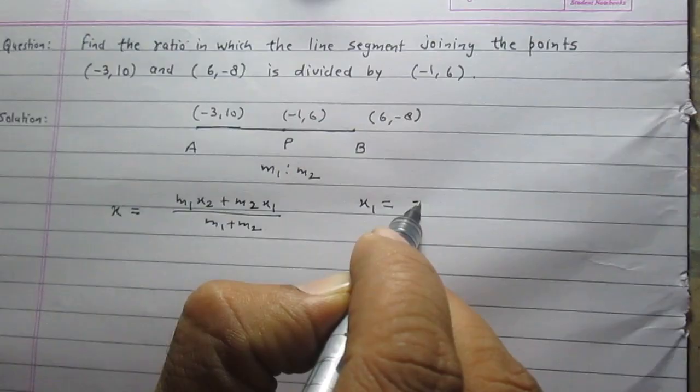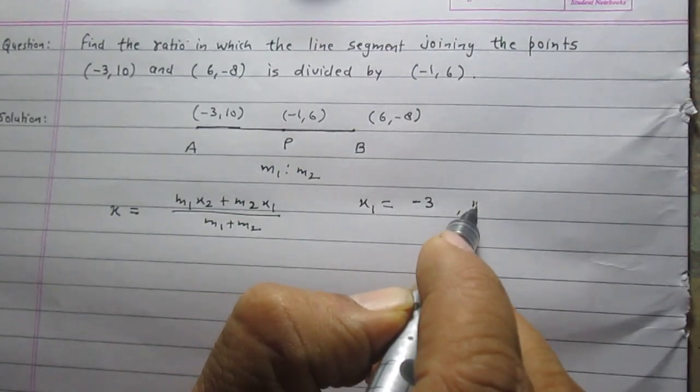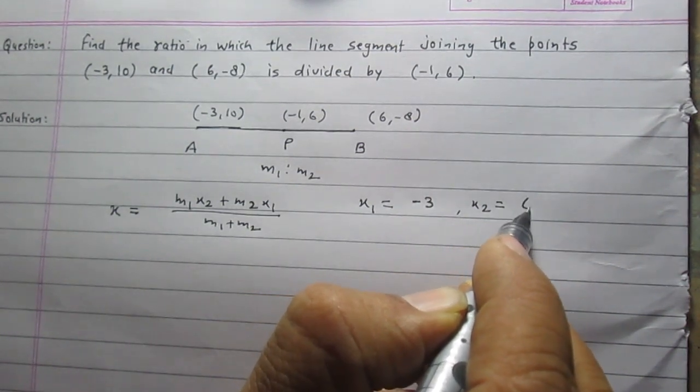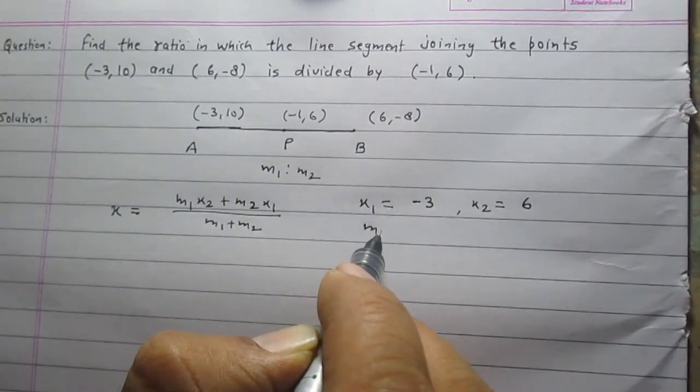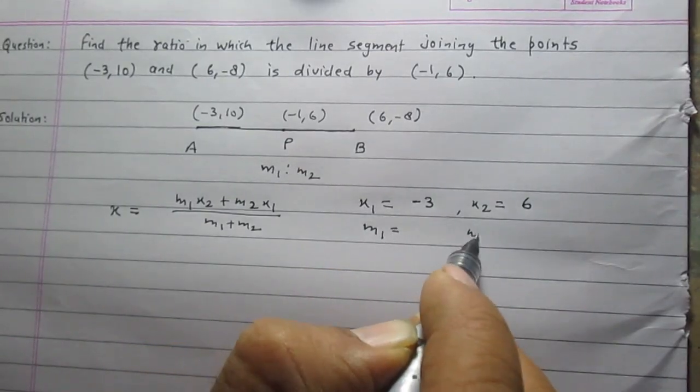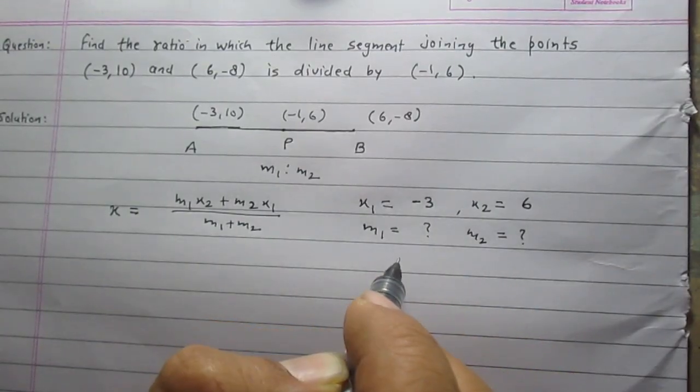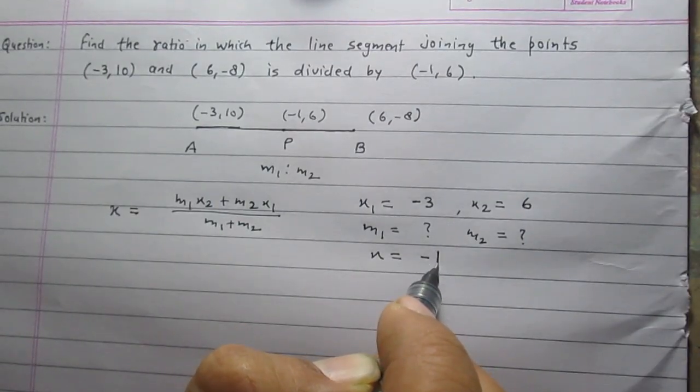x₁ is equal to the x-coordinate of point A, which is -3. x₂ is equal to the x-coordinate of point B, which is 6. m₁ and m₂ are unknown and we are to find them. x is the x-coordinate of point P, which is -1.